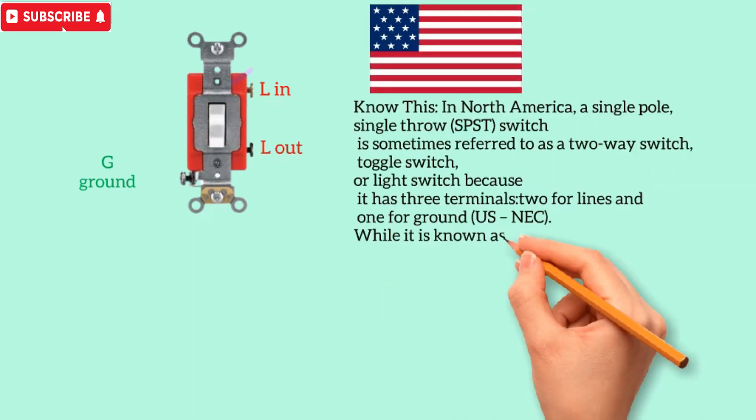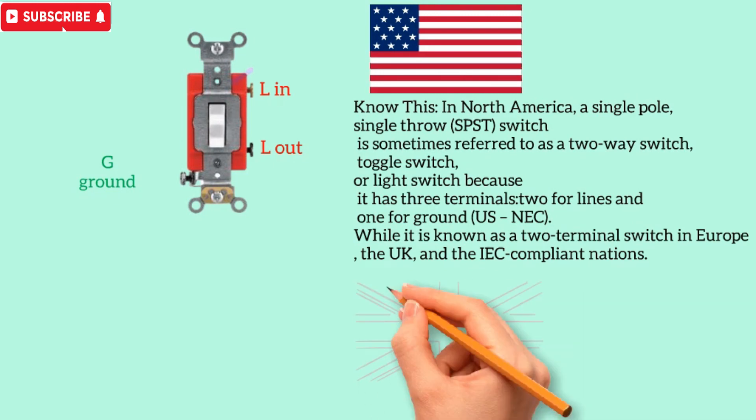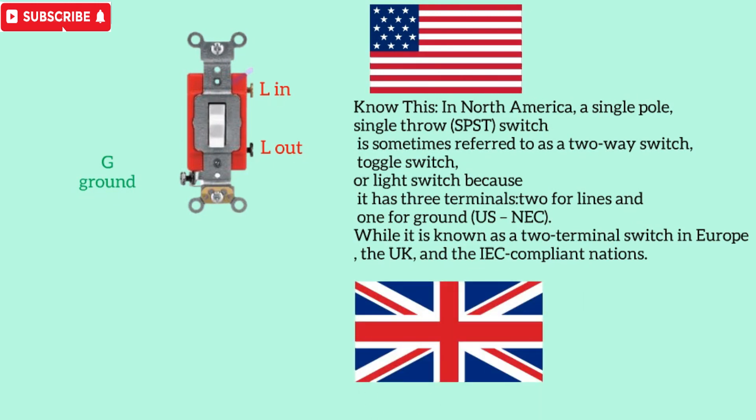In North America, a single-pull-single-throw switch is sometimes referred to as a two-way switch, toggle switch, or light switch because it has three terminals, two for lines and one for ground, while it is known as a two-terminal switch in Europe, the UK, and the IEC-compliant nations.